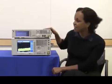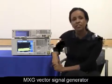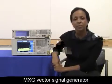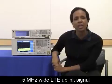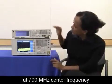In my setup, I have an Agilent MXG vector signal generator configured with a 5 MHz wide LTE uplink signal at 700 MHz center frequency, which is the frequency band that's used to deploy LTE in the United States.